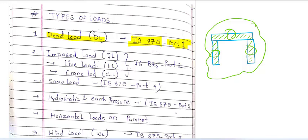In your standard code IS 875 Part 1, you can use the code — if you design to the requirement, then you can choose values. The second category is imposed loads.